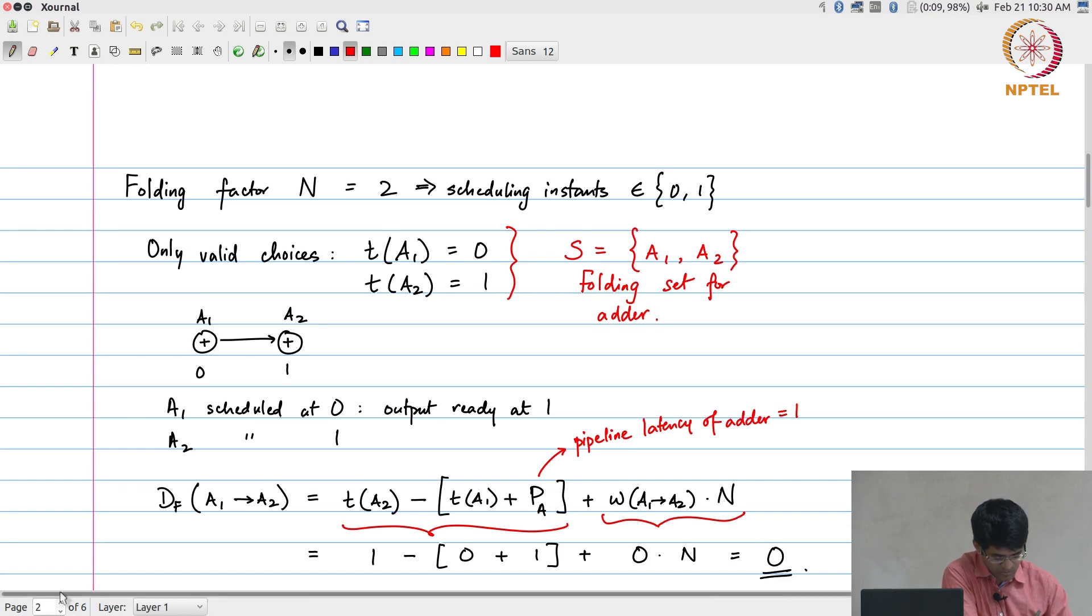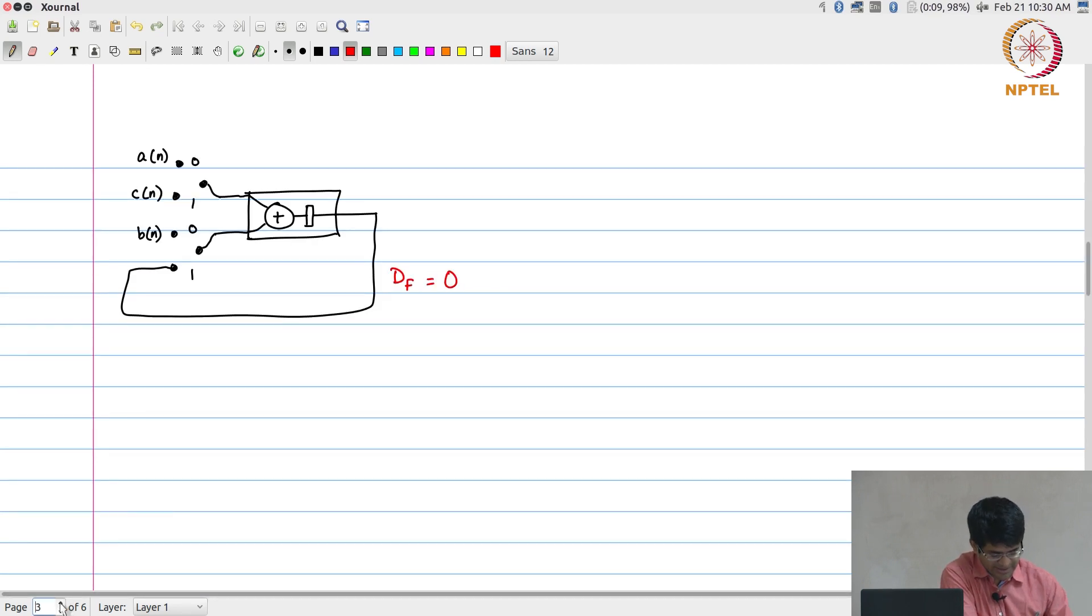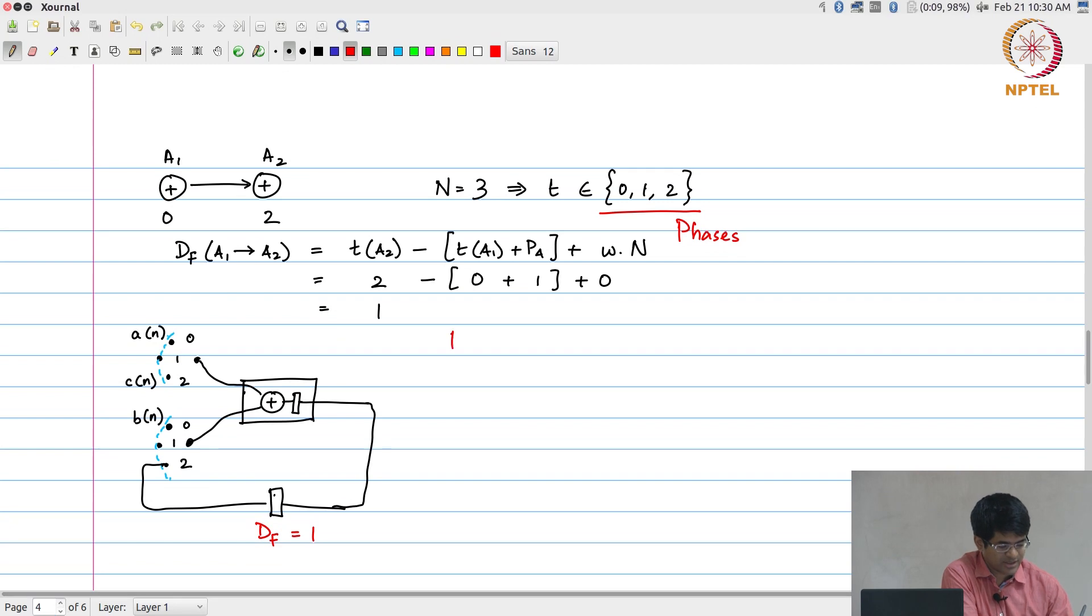So in the next example, in this one over here, effectively what this corresponds to is the folding set S equal to a1, what happens in time instant 1? Nothing. So I will just put a null over there, use the symbol phi to indicate a null element, and a2. Either a null or just a dash, essentially to indicate that no operation is happening over there.